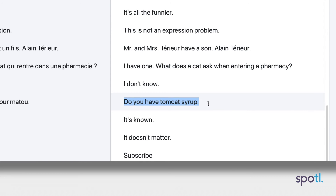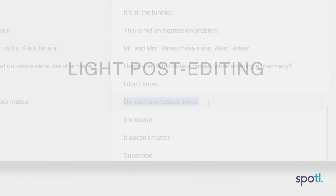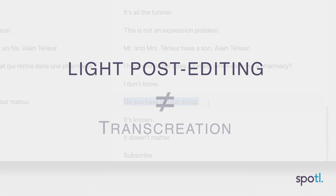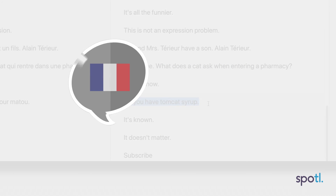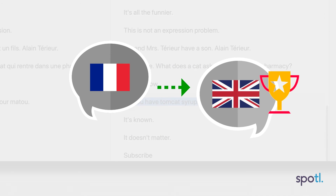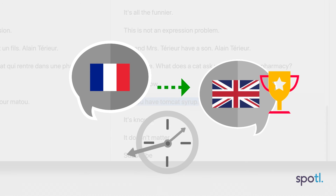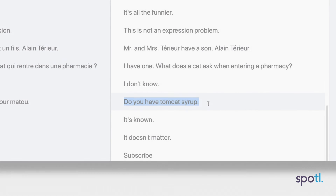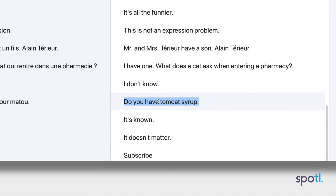In light post-editing, there is obviously no time for transcreation. Unless the comic equivalent immediately comes to mind and you can transcribe the joke perfectly into the target language, in most cases this is a much more complex process. You will have to translate the joke literally, opting for the most logical and comprehensible solution.